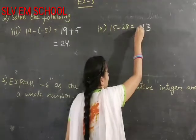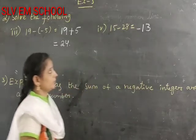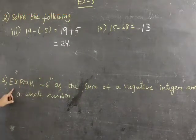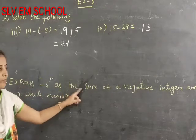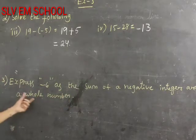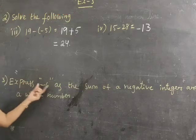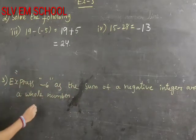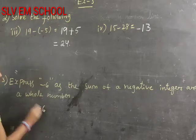Now going to problem 3: Express minus 6 as sum of a negative integer and a whole number. We have to write minus 6 as sum of negative integer and whole. Here negative integer means minus 6.